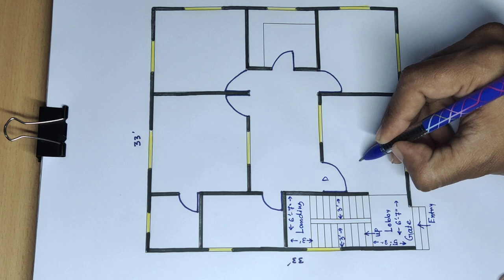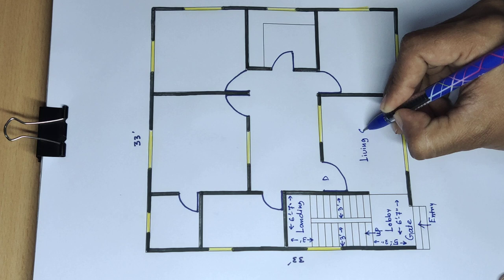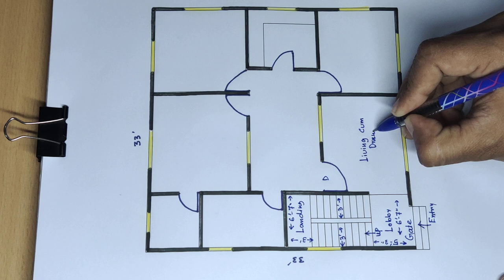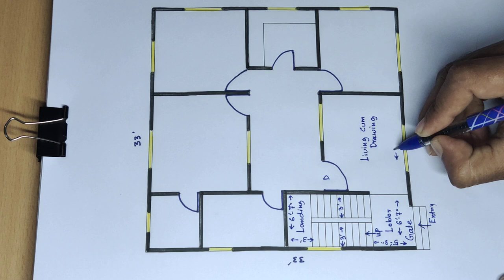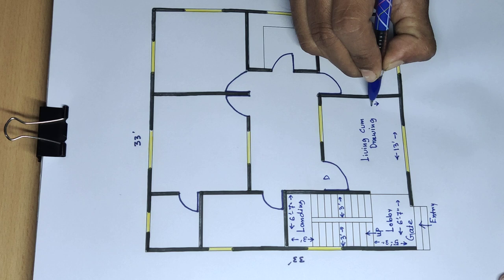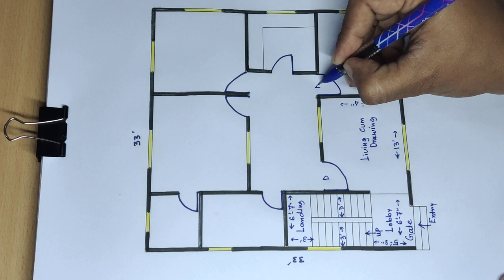Living area, the stair upholding is 13 feet. Next is 10 feet 4 inches. Next door will be 3 feet.